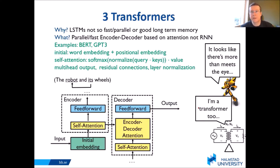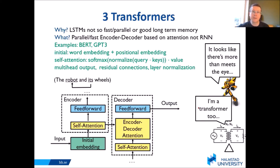I've shown the basic calculation for one head, and then you also have multiple heads — so you're doing this for different words in the sentence. You also have residual connections so you can push forward the original values, and you also have normalization. For example, the sentence 'the robot and its wheels' — attention will help you understand that 'its' is referring to the robot.